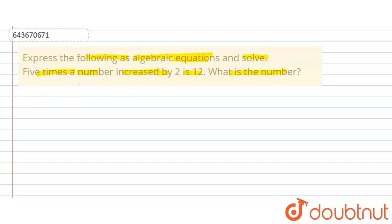First of all, let us assume the number to be, let's say, x. So according to the question, five times a number, that means five times...